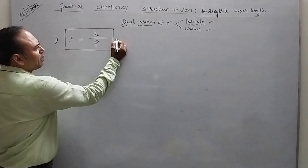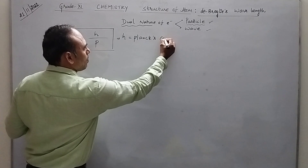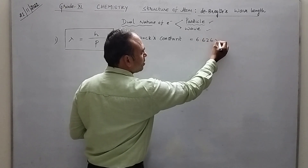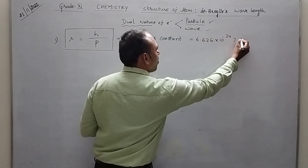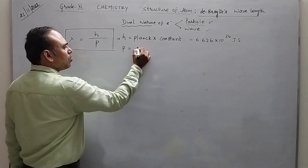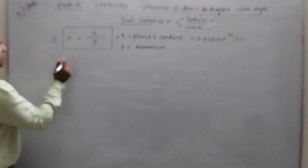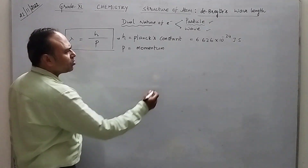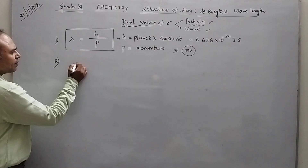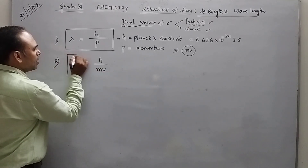Here lambda is the wavelength, H is equal to Planck's constant and the value is 6.626 into 10 to the power of minus 34 joule into second. And P is momentum — so momentum of electron. From this we can derive another formula where we know that the momentum is the product of mass and velocity. Hence we can write the wavelength as H by MV.